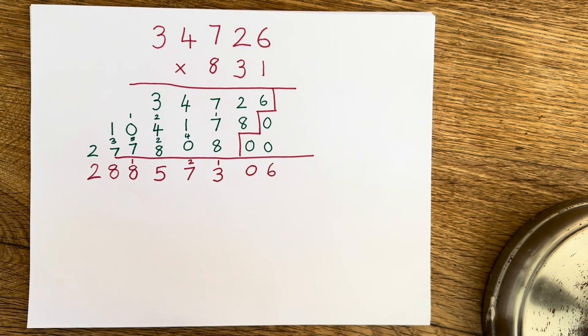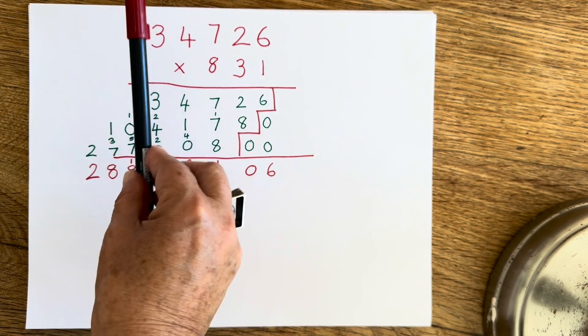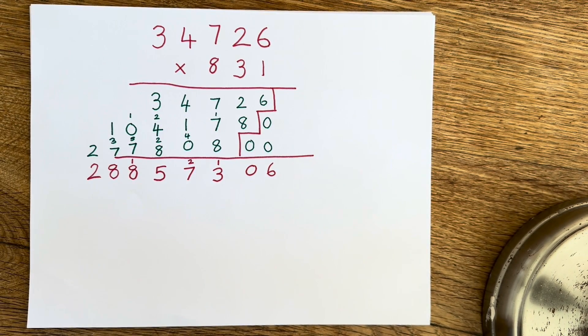You can see I've been pretty careful to line up my ones, my tens, my hundreds, my thousands, and so on, so that I've got everything in the right place. And one thing that is worth mentioning as well is when you're adding up the columns...